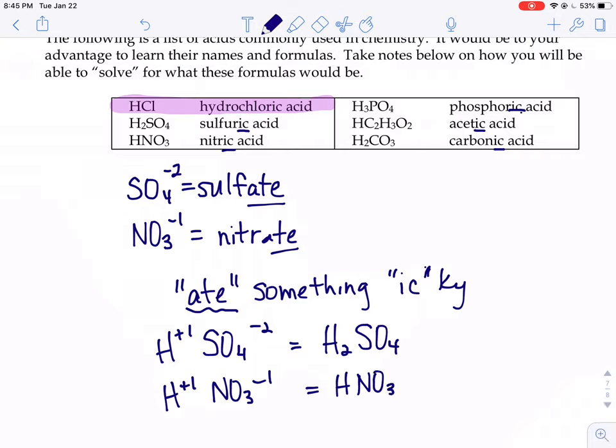All of these are just hydrogen with the ate ion, it kind of sounds like. So, phosphoric kind of sounds like phosphate. If you combine hydrogen with phosphate, phosphate is PO4 with a negative three charge. So, H3PO4.